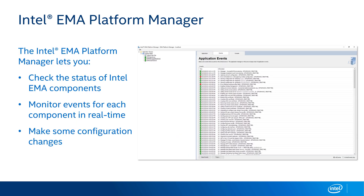Next, I'd like to talk about the Intel EMA Platform Manager. The EMA Platform Manager lets you look at the status of your Intel EMA server as a whole. This is where you can go and check on the status of the components that make up the EMA solution. It's where you'll monitor events and can make some basic configuration changes. One important thing to point out is that the Intel EMA Platform Manager does all of its logging at a server level, not at a tenant level. So you have to be a global administrator to interact with this tool and see all the logs.